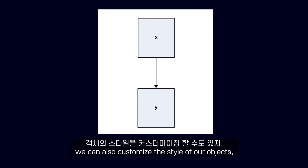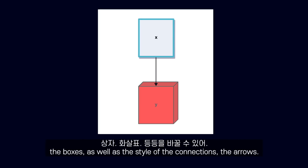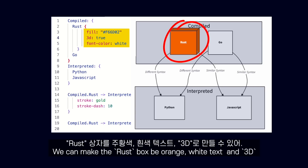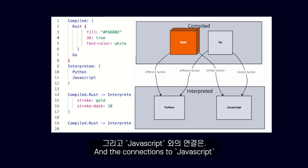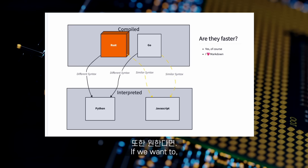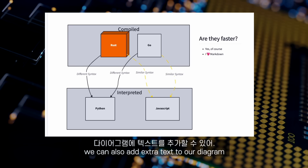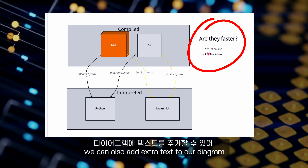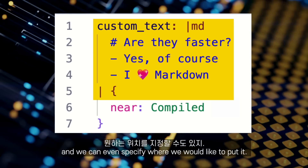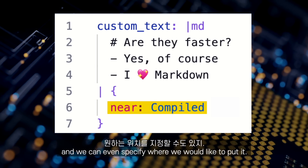If we want to, we can also customize the style of our objects — the boxes — as well as the style of the connections, the arrows. We can make the rust box be orange, white text, and 3D. And the connections to javascript to be golden yellow and dashed. We can also add extra text to our diagram. We can use markdown and we can even specify where we would like to put it.